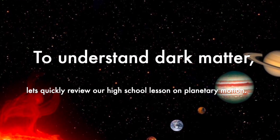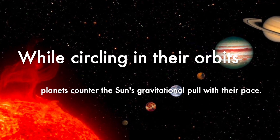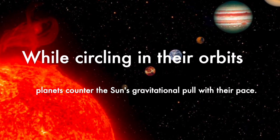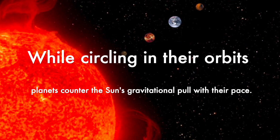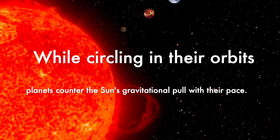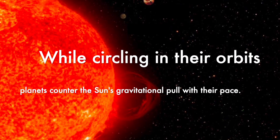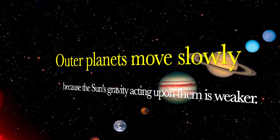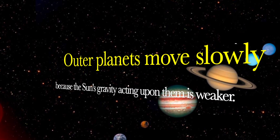We all know that the planets in the solar system revolve around the sun. While circling in their orbit, the planets counter the sun's gravitational pull with their pace. If they lessen the pace, they will collapse into the sun. If they increase their speed, they will escape from their orbit. Planets like Mercury, Venus or Earth, who are closer to the sun, revolve fast because the sun's gravitational pull is more towards them. Planets like Jupiter, Neptune and Uranus move slowly to balance the weaker force of sun's gravity acting upon them.